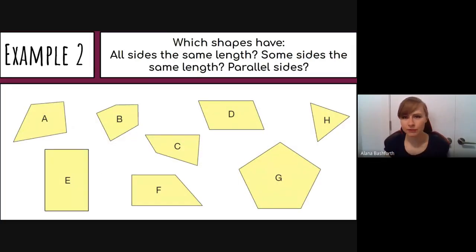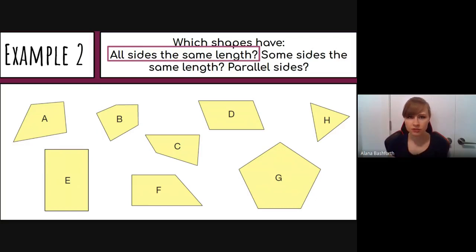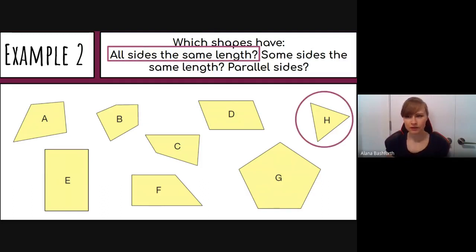For Example 2, we identify which shapes have all sides the same length, some sides the same length, and parallel sides. It helps to focus on one attribute at a time. Looking at all sides equal, only shape H qualifies — shape G looks close, but its bottom is smaller than the other sides.